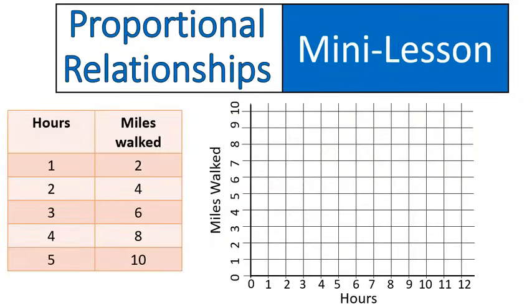On this slide, you can see that there is a table over on the left, hours and miles walked. That's how you will see a lot of proportional relationships listed like that, or you might have some blanks that you have to fill in. But in this one, we're talking about taking that table of values and then actually graphing it.